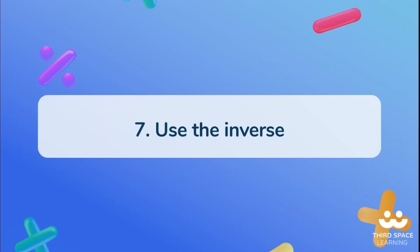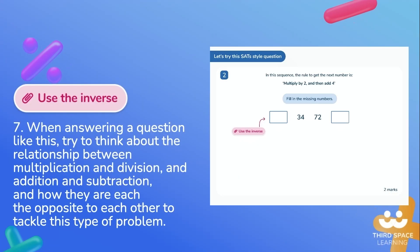Strategy seven: use the inverse. When answering a question like this, try to think about the relationship between multiplication and division and addition and subtraction, and how they are each the opposite to each other, to tackle this type of problem.